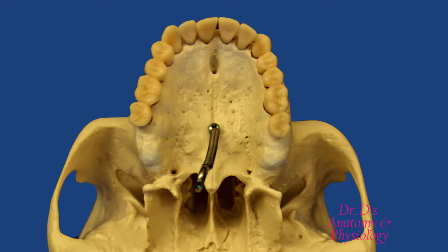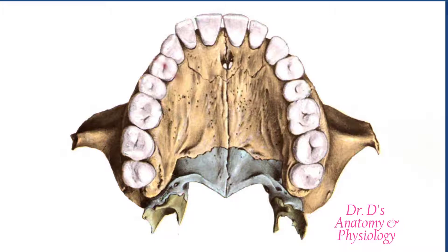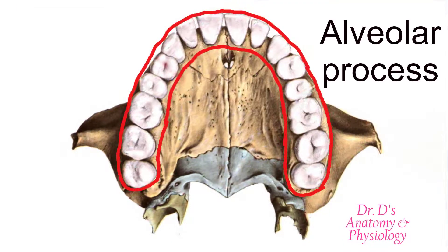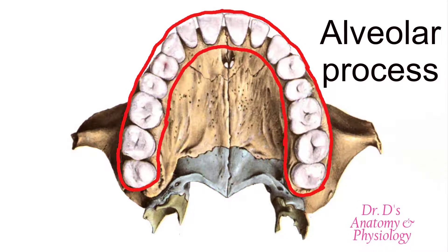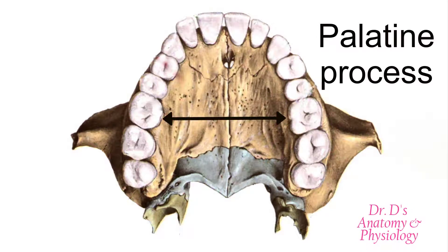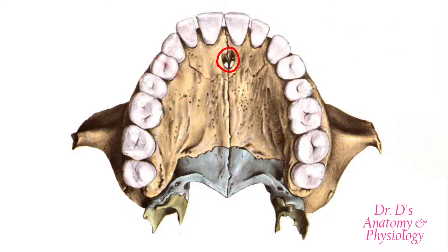Let's continue looking from this view using a figure. This figure highlights the contribution of both the maxillary and the palatine bones to the hard palate. Note the alveolar process of both sides — you can see that the alveolar processes of both bones form a horseshoe-shaped process. Here we have the palatine process of both maxillary bones contributing to the formation of the hard palate. Here again we can see the incisive foramen.